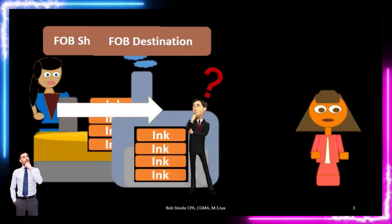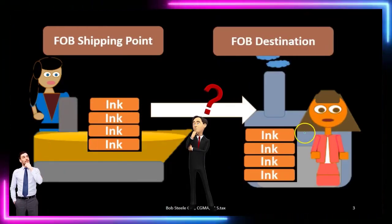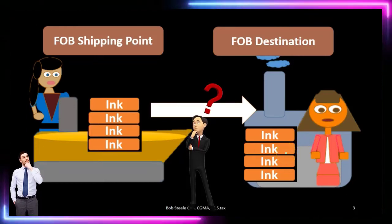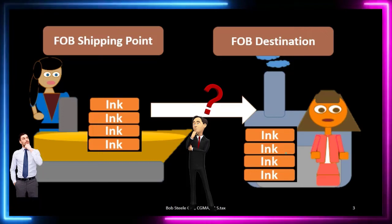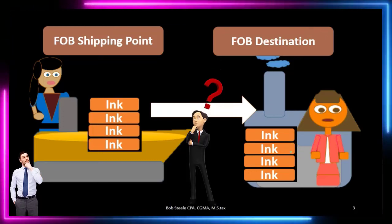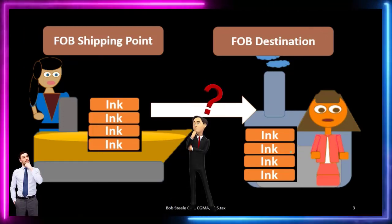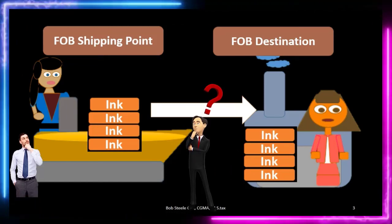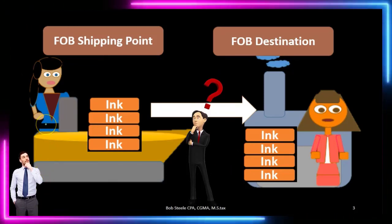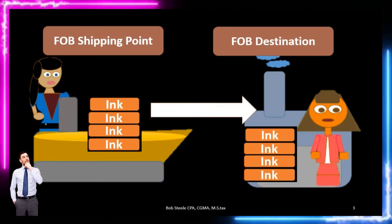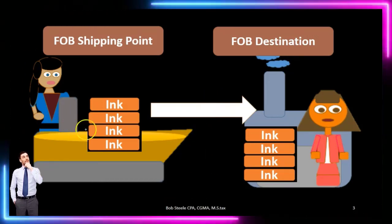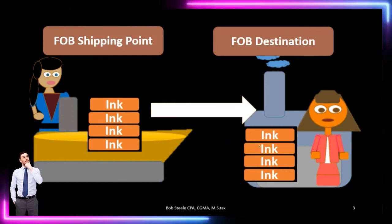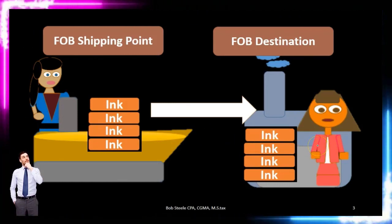On the other hand, if we're saying FOB destination, the inventory does not change hands and is not recorded as inventory on the buyer's records until it has reached the destination. That would mean the prior owner — the seller — is responsible for it during the shipping process, and only at the point of destination does the new owner then record it as inventory.